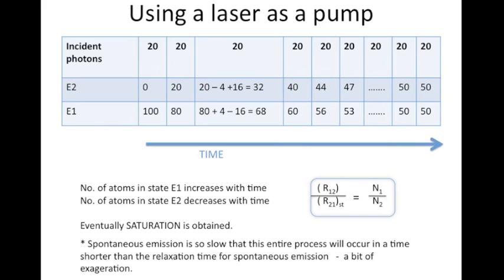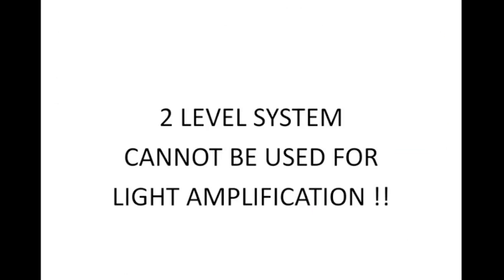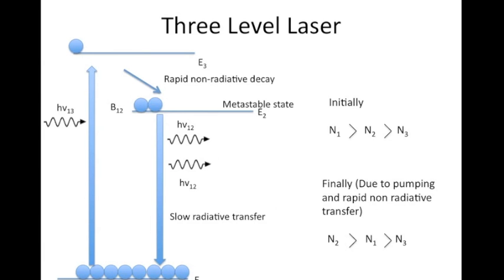So it is impossible to achieve population inversion in a two-level system even if we manage to overcome spontaneous emission and break the thermal equilibrium. But there is a way to overcome this impasse. The first breakthrough came in 1960 in the form of a ruby laser, which used a three-level lasing medium. Although three-level lasers are not very efficient, they were the first ones to be created.